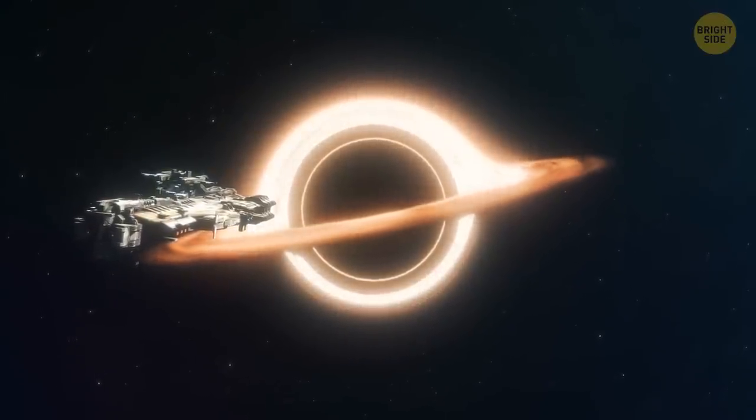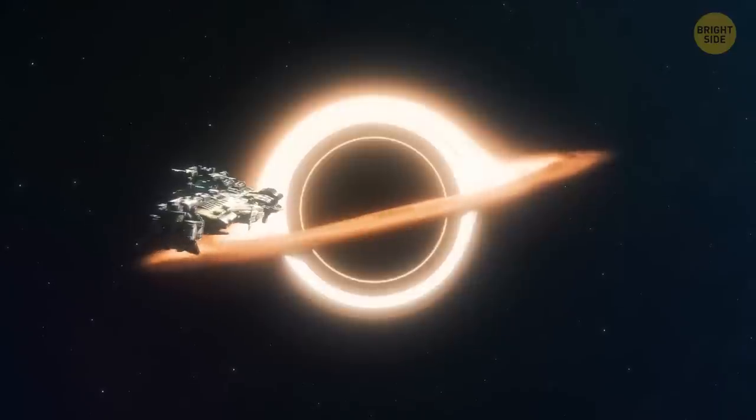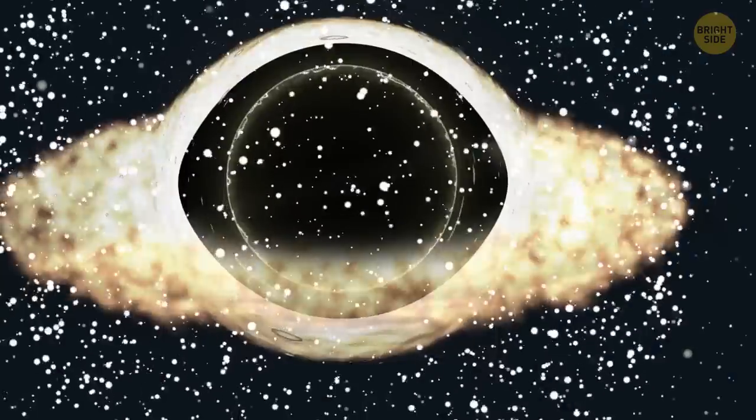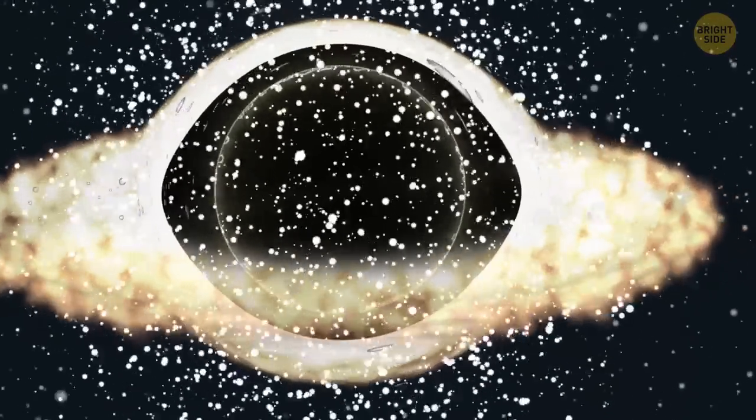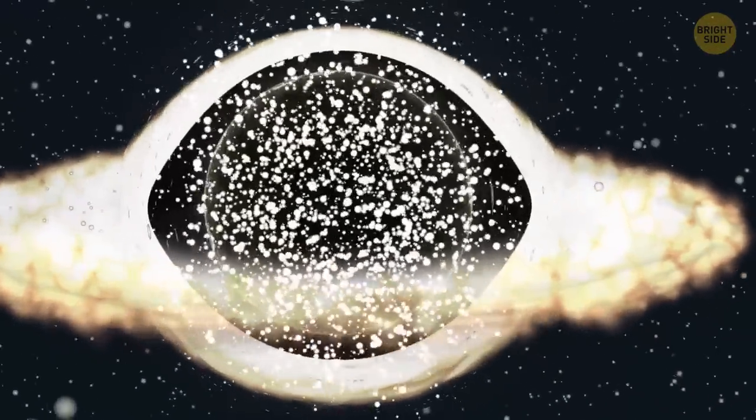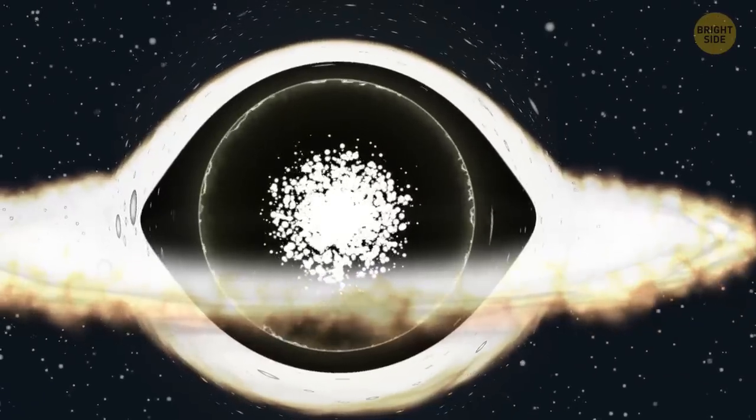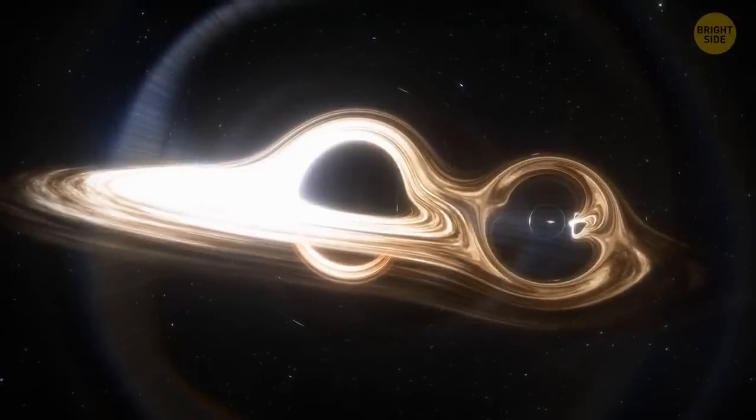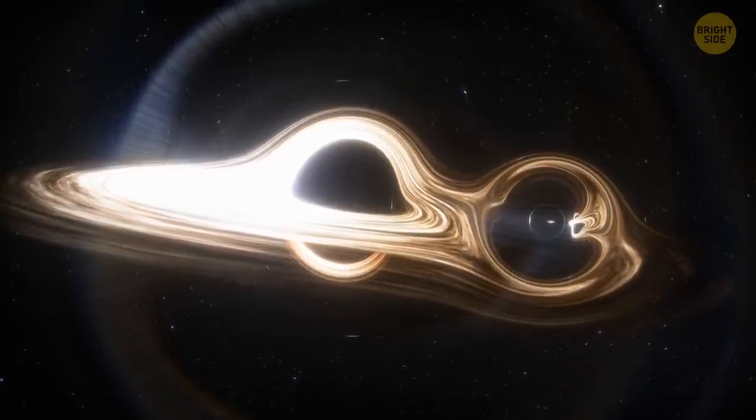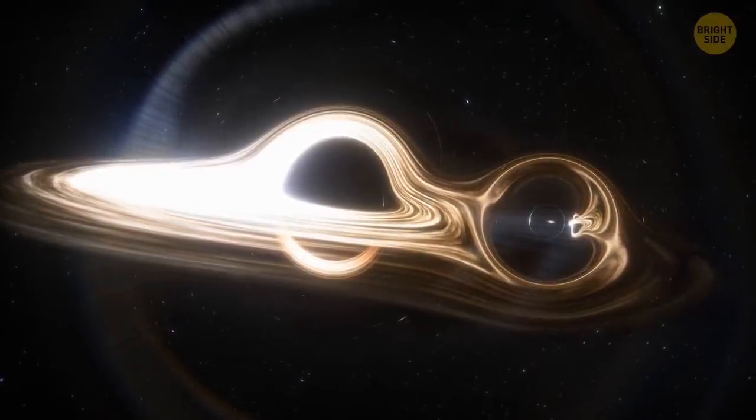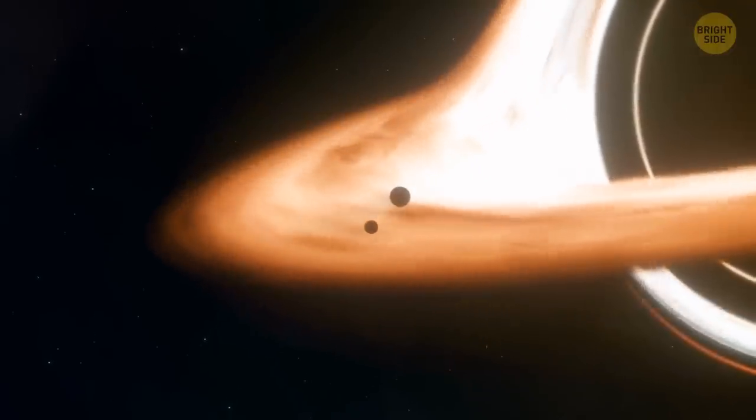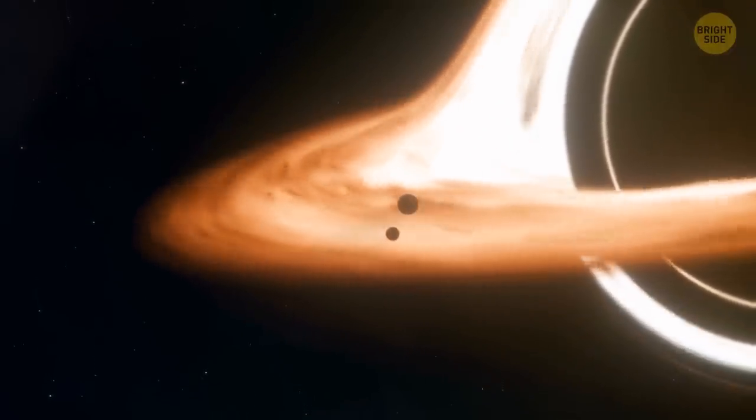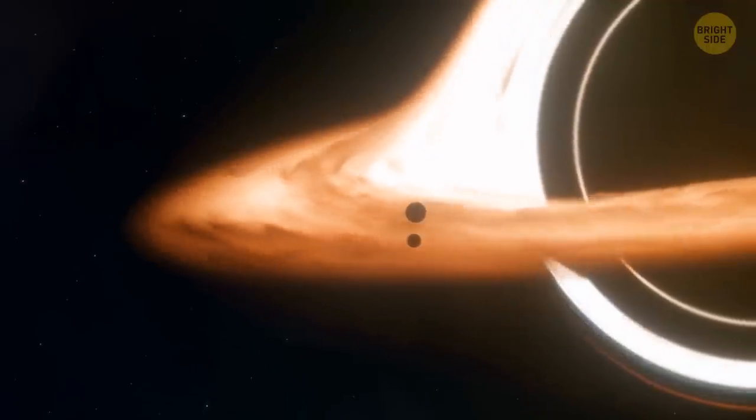But you better not get near any of them, as a black hole's diet consists of matter. By calculating how much matter they consume, scientists can determine their rate of expansion. And those black holes have quite an appetite. Astronomers believe there are stupendously large black holes, or slabs, hiding somewhere in the Universe. If they're real, their mass is estimated to be greater than 100 billion times that of the Sun.